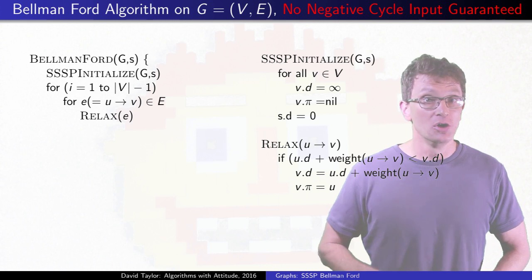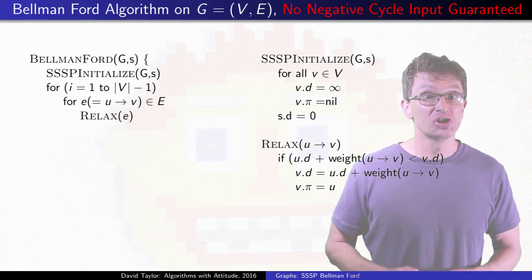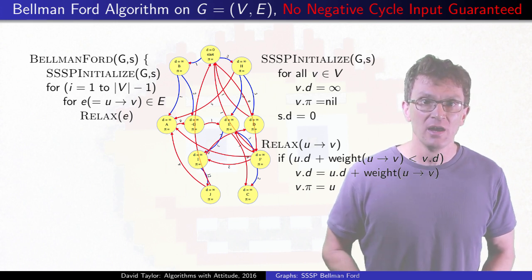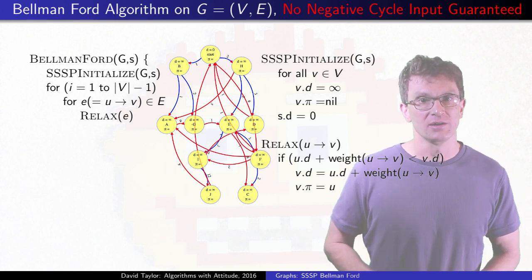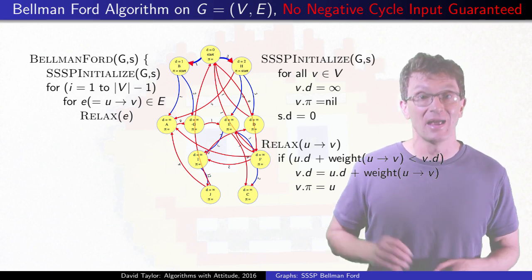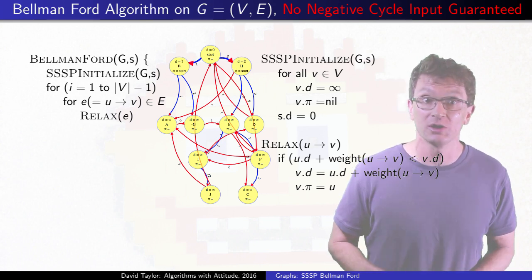If there are no negative weight cycles, the shortest path tree will have no more than V vertices and V minus 1 edges. If we relax all of the edges once, we must have relaxed all of the edges on the top level of that tree, even if we don't know what the tree is.